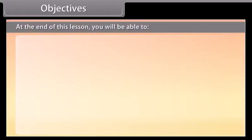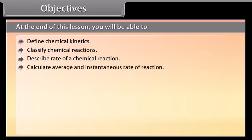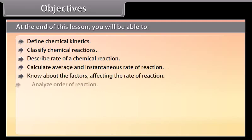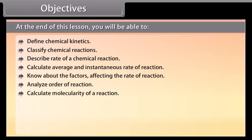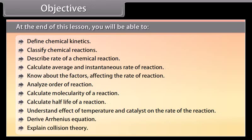At the end of this lesson, you will be able to: define chemical kinetics; classify chemical reactions; describe rate of a chemical reaction; calculate average and instantaneous rate of reaction; know about the factors affecting the rate of reaction; analyze order of reaction; calculate molecularity of a reaction; calculate half-life of a reaction; understand effect of temperature and catalyst on the rate of the reaction; derive Arrhenius equation; and explain collision theory.